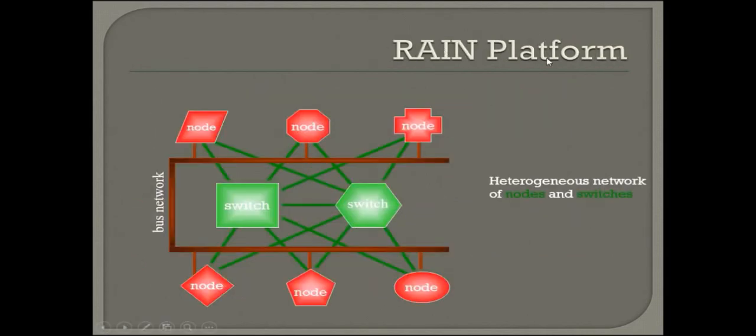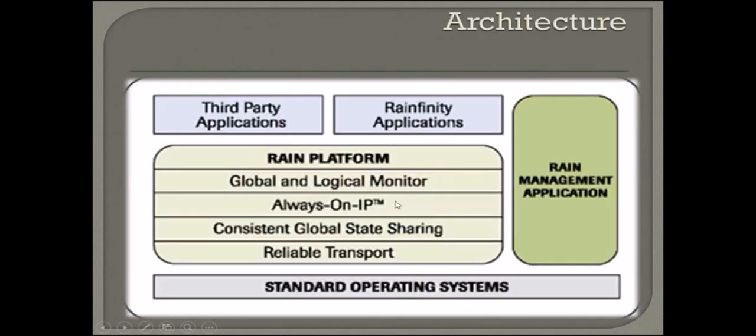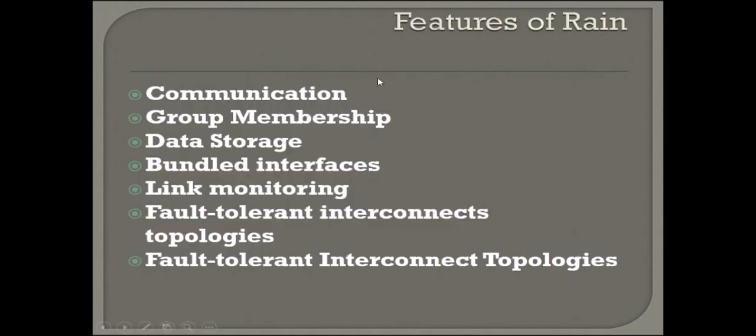This is the RAIN platform. We have different nodes, different types of nodes, different switches, all connected together in a network with a bus network. These are the heterogeneous network of nodes and switches. This is the architecture. RAIN Infinity applications are what we are talking about, along with third-party applications and standard operating systems. This is a RAIN management application. In between we have the RAIN platform: global and logical monitor, always-on IP, consistent global state sharing, and reliable transport.